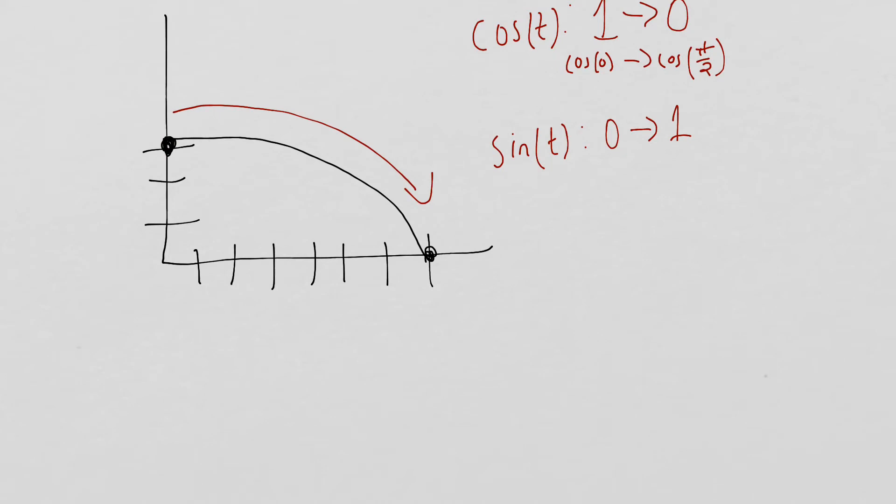So when we think about what's x and what's y, well, sine starts at 0, and we need our x value to start at 0. So our x value must be sine with some coefficient.